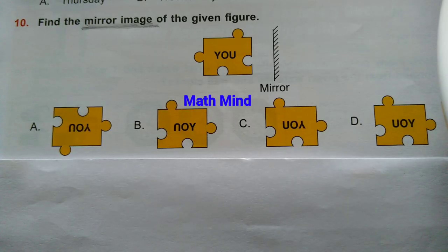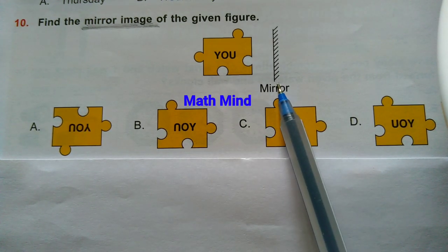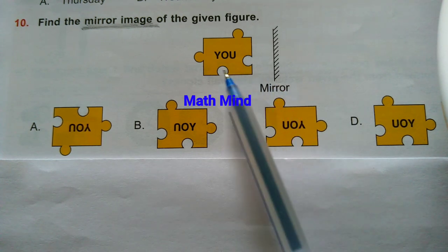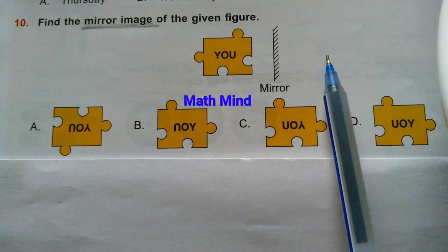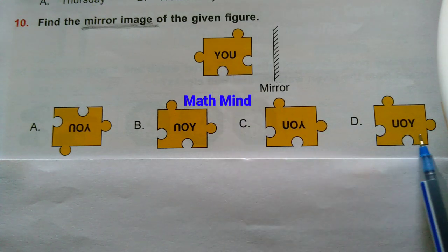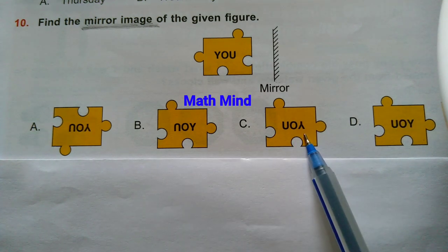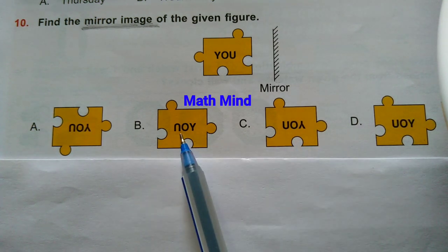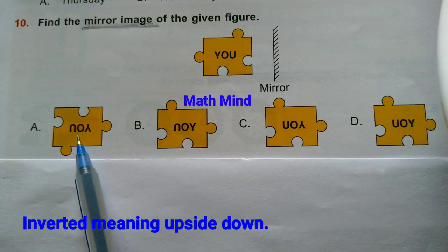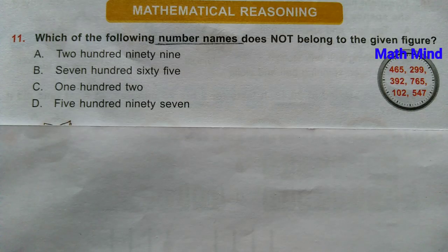Question number 10: Find the mirror image of the given figure. This is the given figure and this is the mirror, which is placed vertically. The image of this figure will form here. Regarding the word: this is U. Option D is correct — options A, B, C are cancelled. In A, Y is inverted which is wrong. In B, U is inverted which is wrong. In C, both U and Y are inverted which is wrong. So option D is correct.